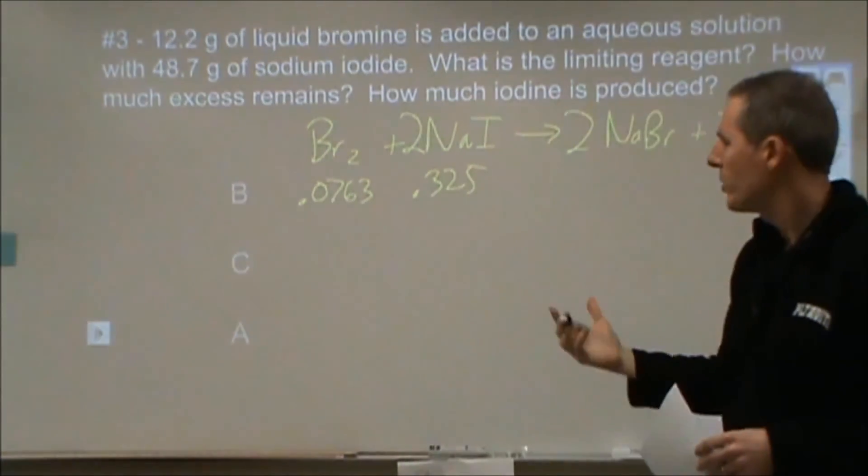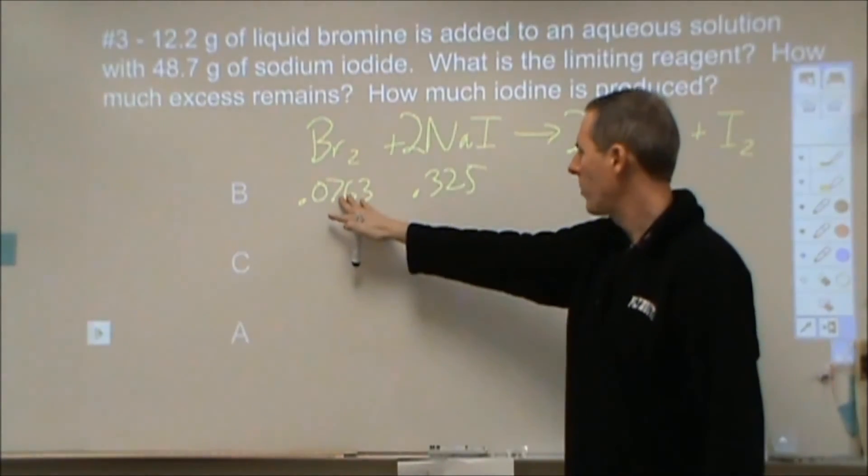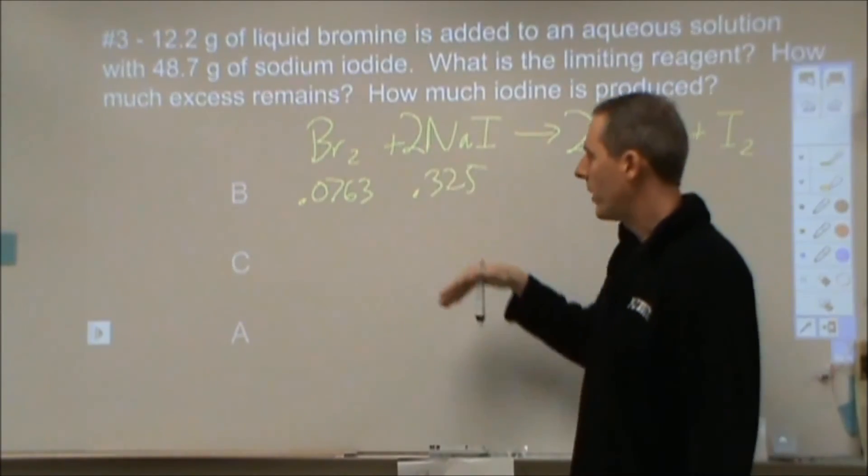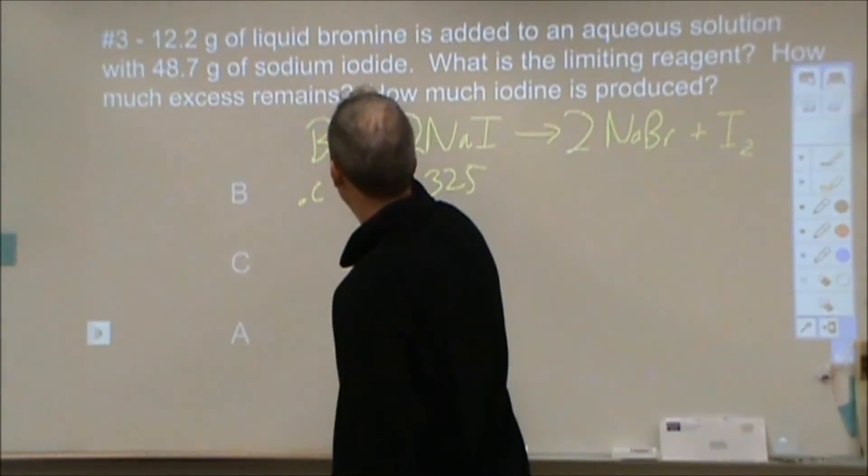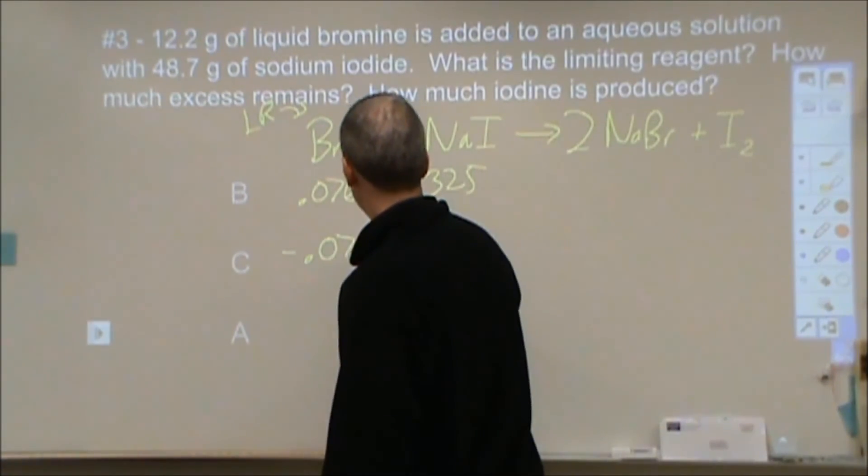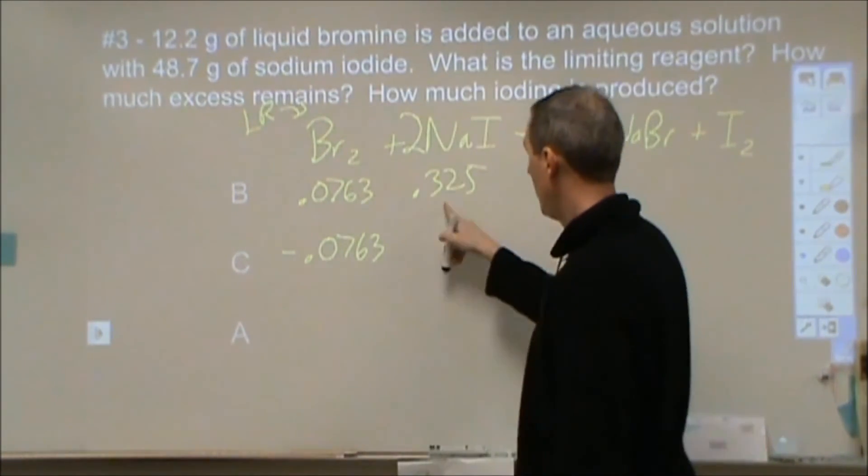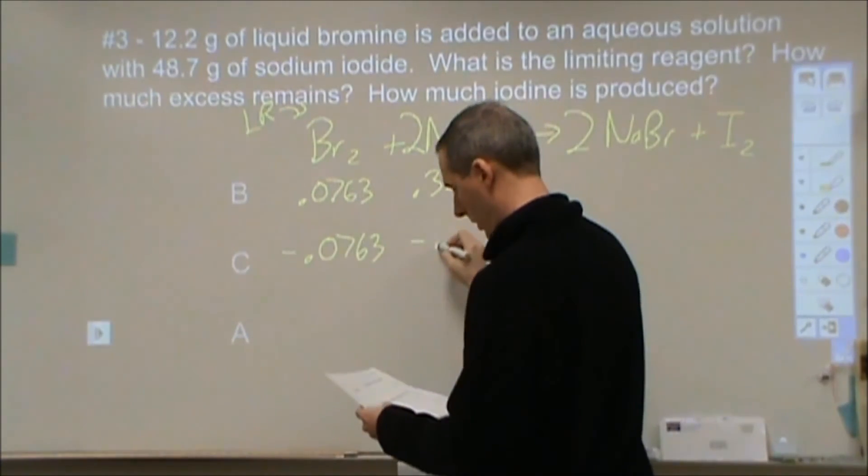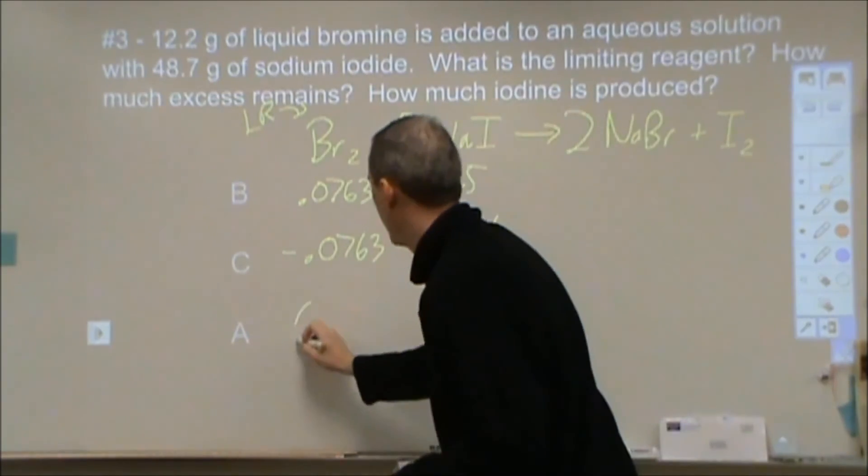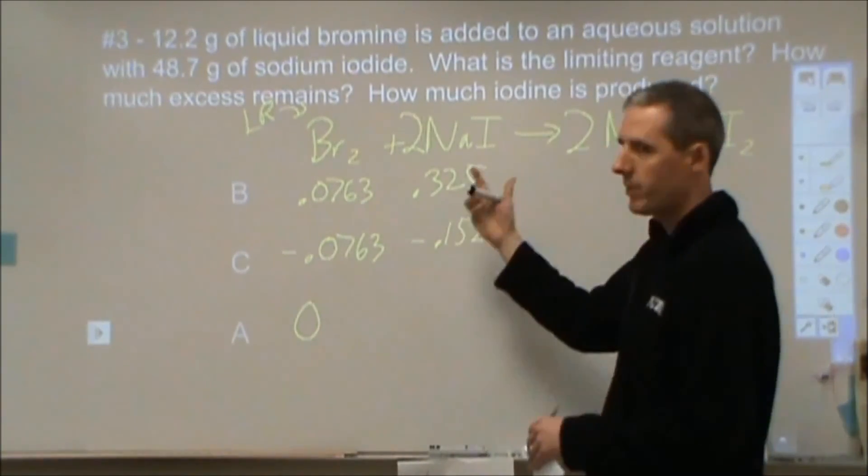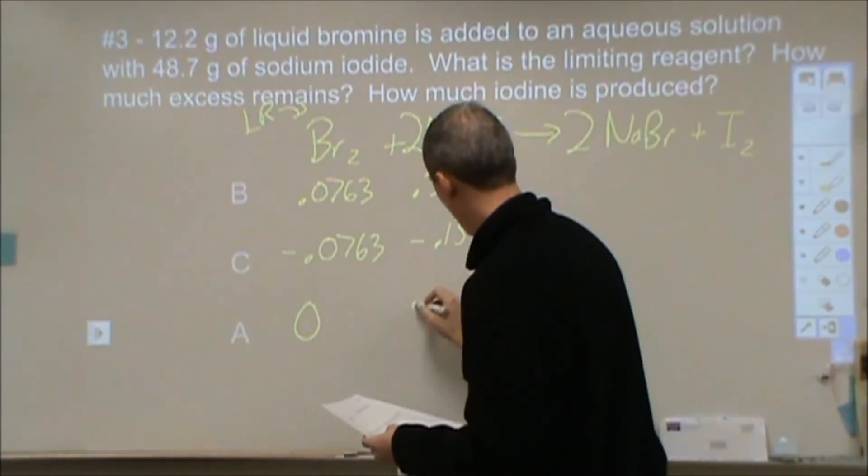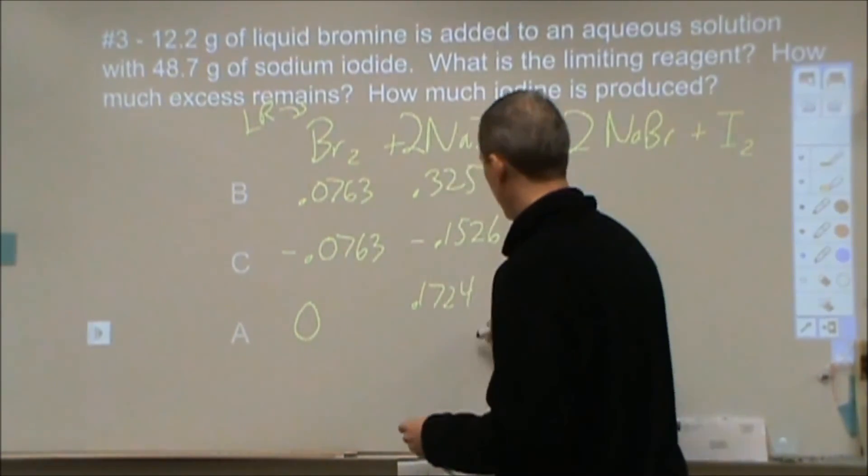So again, this is a situation where I can tell that this is probably going to be the thing that runs out. This looks like it's a good four times as much as that. And I only need twice as much. So let's assume this is my limiting reagent. Let's see how that goes. I would lose 0.0763 of this. And I'm going to lose double that of this, which is 0.1526. So we run out of this, have some excess of this. We were correct. And we end up with 0.1724 moles excess.